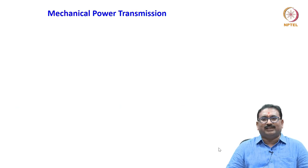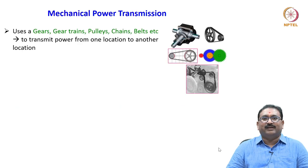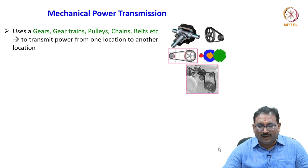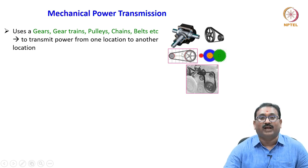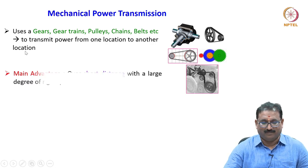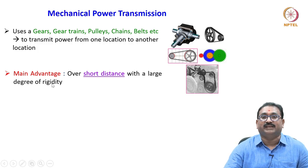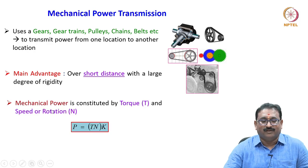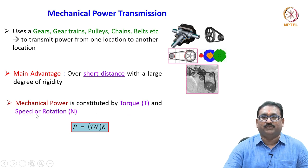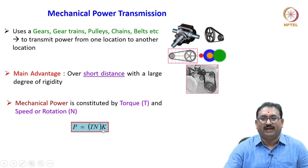In mechanical power transmission, we use gears, gear trains, pulleys, and belts to transmit power from one location to another. The main advantage is transmission over a short distance with a large degree of rigidity. Mechanical power is constituted by torque and speed, and P is a function of T and N.